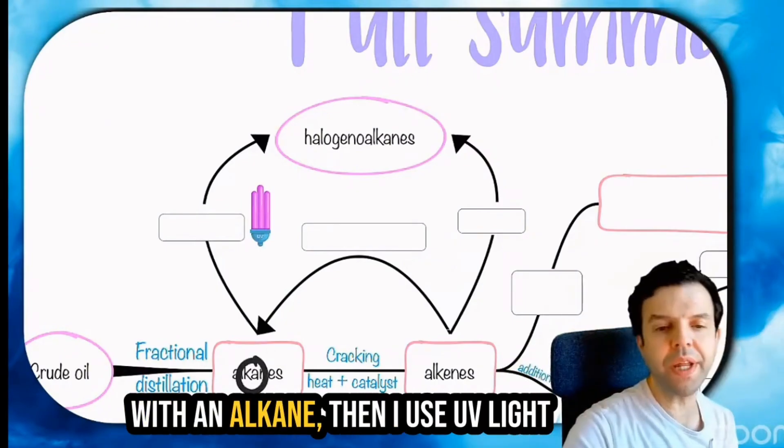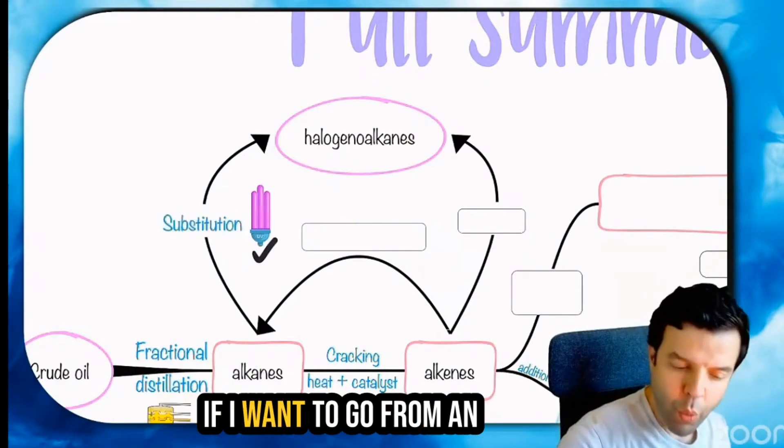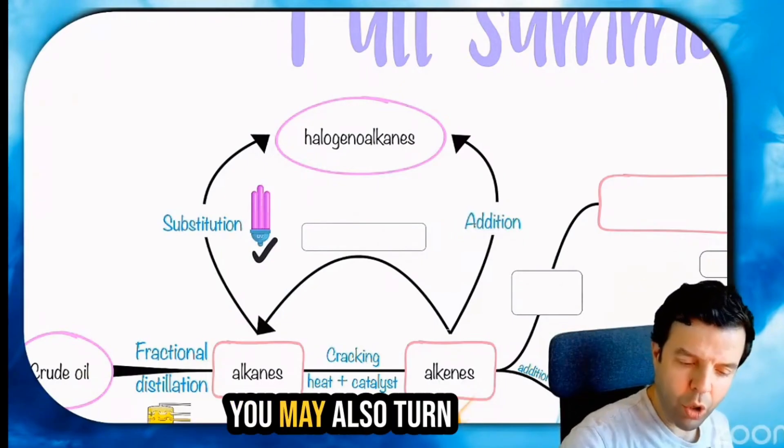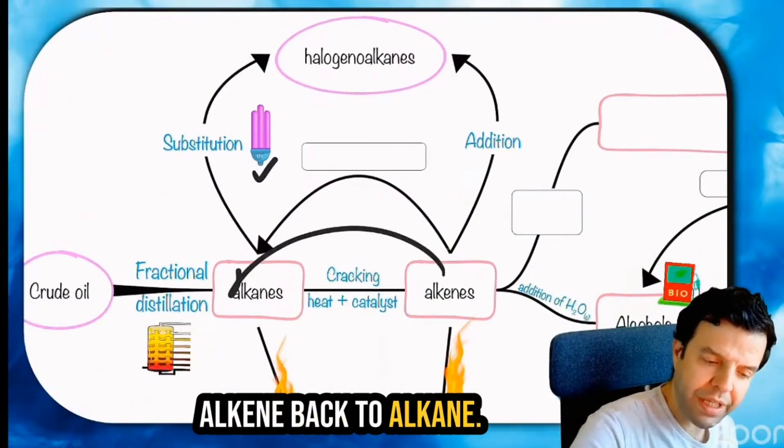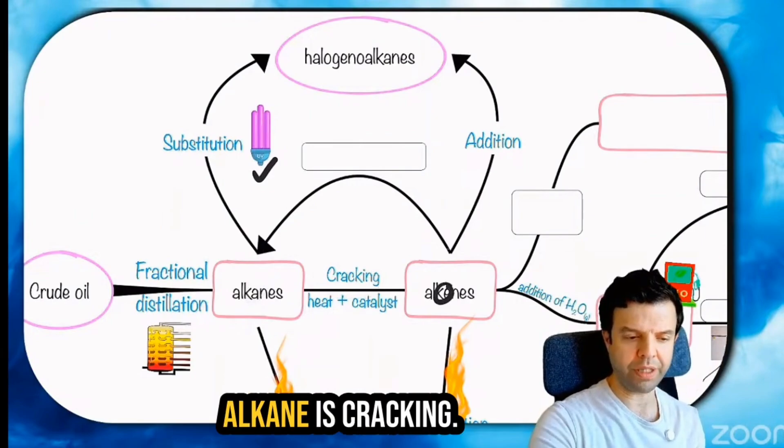If I want to start with alkanes, then I use UV light in the reaction. If I want to go from an alkene, then I just do it. With alkanes, you may also turn alkanes back to alkenes. If I'm going like, it's cracking, right? Alkanes to alkenes is cracking.